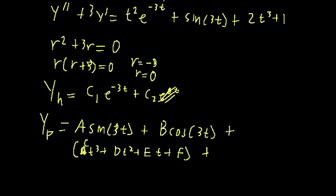And now we're just left with this term here. A polynomial times an exponential, which is just going to be g times t squared plus h times t plus i, all of that times e to the negative 3t. So we have our particular solution.